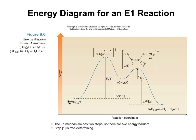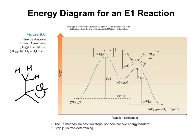Here we have the energy diagram for an E1 reaction. We start with our starting material. The leaving group leaves first — that is the rate determining step — and the carbocation forms. Then the base comes and extracts that beta hydrogen, forming the double bond.